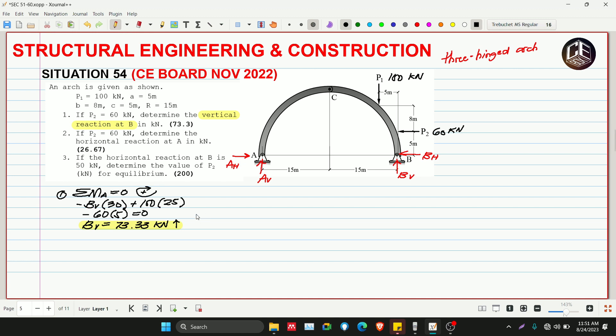Next, P2 is 60 kilonewtons. The problem asks: determine the horizontal reaction at A. To get the horizontal reaction at A, we need to get the vertical reaction at A first. Why? We'll isolate member AC, then take moments at C so that AH will rotate. For summation of forces vertical equals zero, upward is positive, we can get AV immediately: AV plus BV which is 73.33 minus P1 which is 100 kilonewtons.